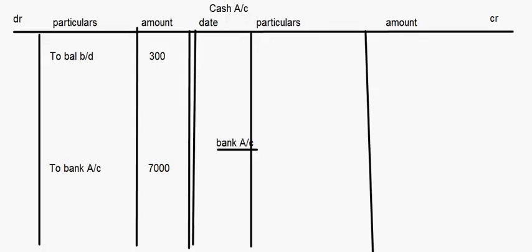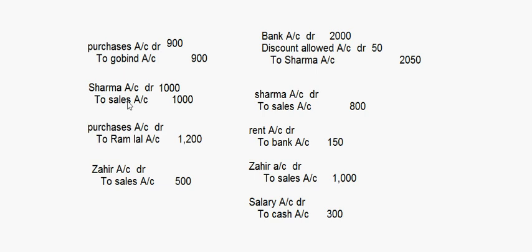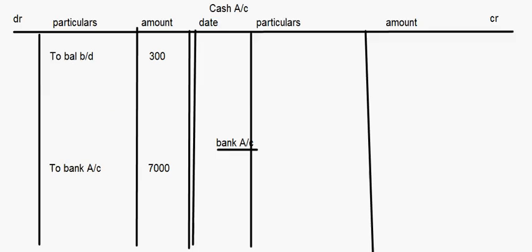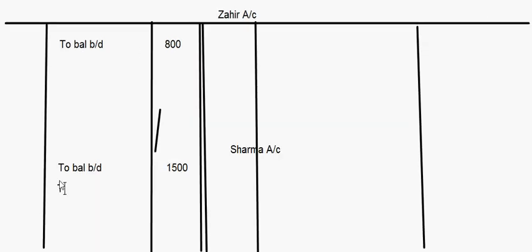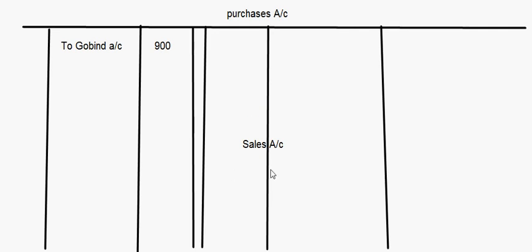The next entry is Sharma account to sales account. In Sharma account, sales account is debited, so we write 'To sales account Rs. 1,000'. In the sales account, we write 'By Sharma account Rs. 1,000' on the credit side.